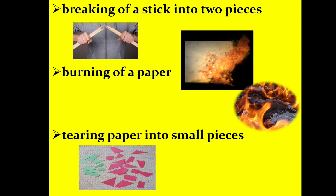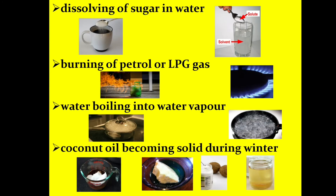Here are some sentences with pictures — think and identify which is a physical change and which is a chemical change: breaking of a stick into two pieces, burning of paper, tearing paper into small pieces, dissolving sugar in water, burning of petrol or LPG gas, water boiling into water vapor, and coconut oil becoming solid during winter.